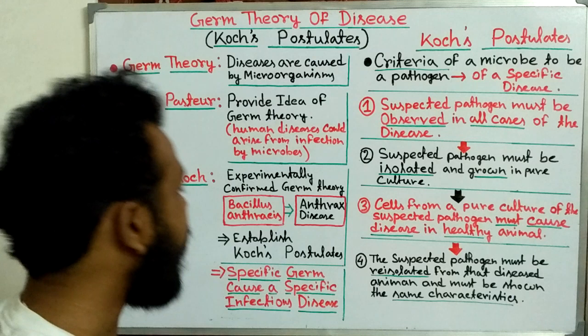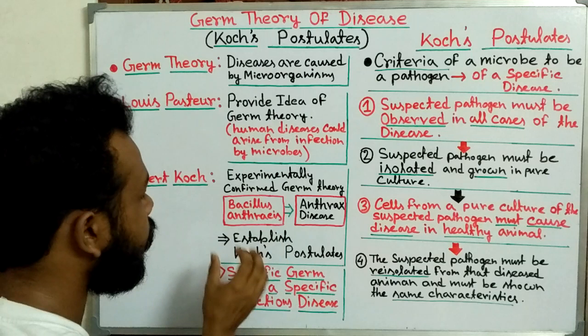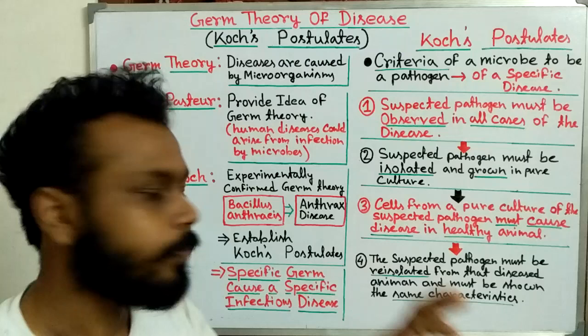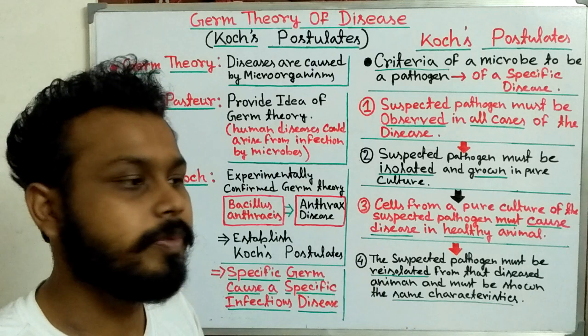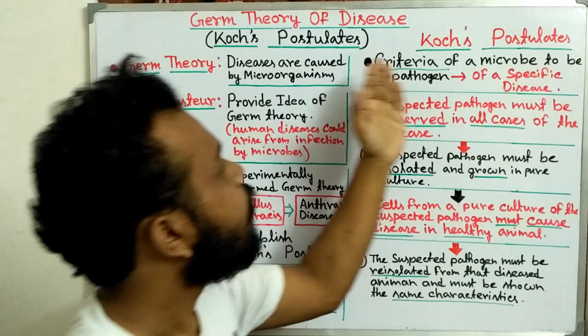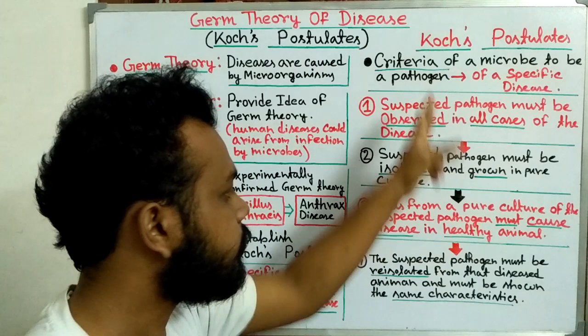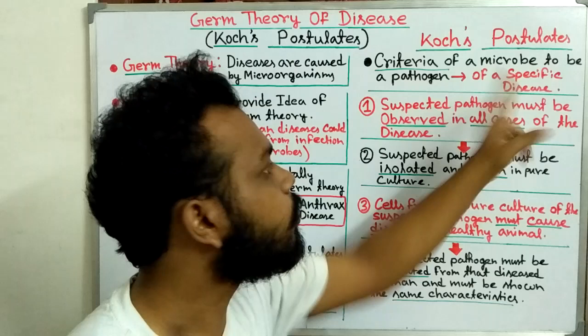At the same time, he established a rule, or postulate, known as Koch's postulates. He gave some criteria and said that if a pathogen or a germ fulfills these criteria, then only we can say that this microorganism or pathogen is responsible for that specific disease. Now let's discuss the four criteria.